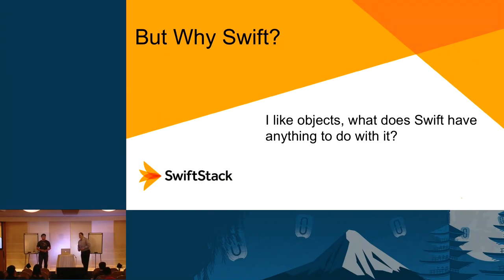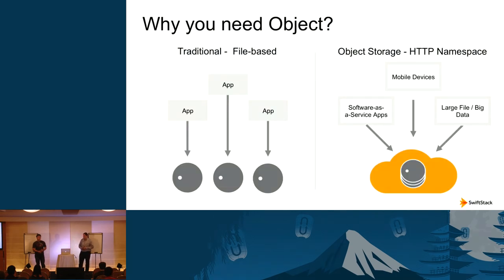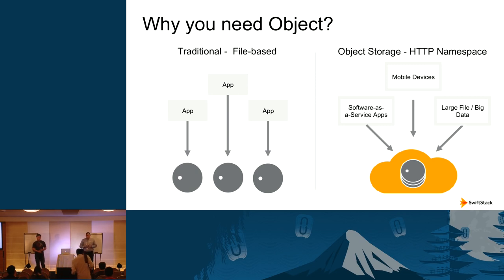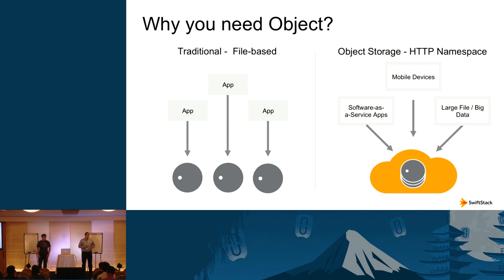So why Swift? What makes Swift different from traditional storage systems? We traditionally access storage via CIFS shares, NFS shares, LUNs, and similar technologies. A limitation is that there's a limited scope — usually accessible only within the enterprise. Swift's native interface is HTTP. By speaking the language of the internet, it can expose your data to various devices and endpoints both inside your organization and anywhere on the internet.